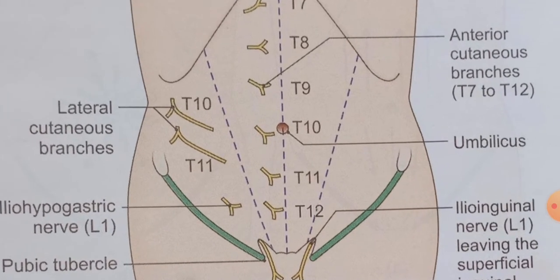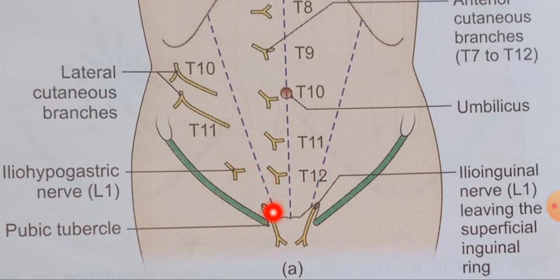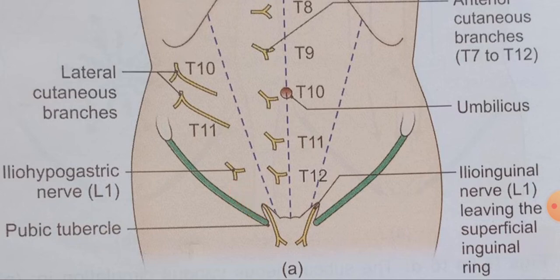The subcostal nerve, T12, supplies the pyramidalis muscle. The iliohypogastric and the ilioinguinal nerves do not enter the rectus sheath. The iliohypogastric nerve becomes subcutaneous about 2.5 centimeters above the superficial inguinal ring.